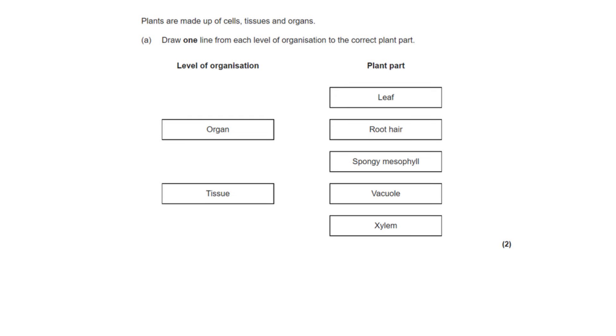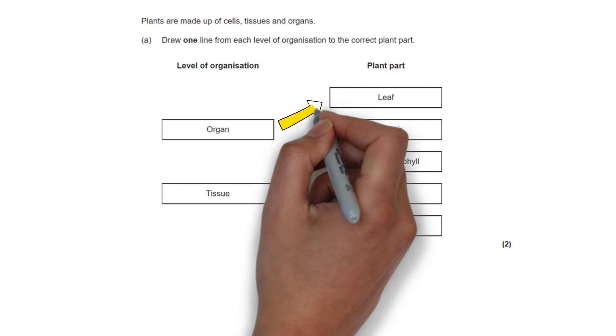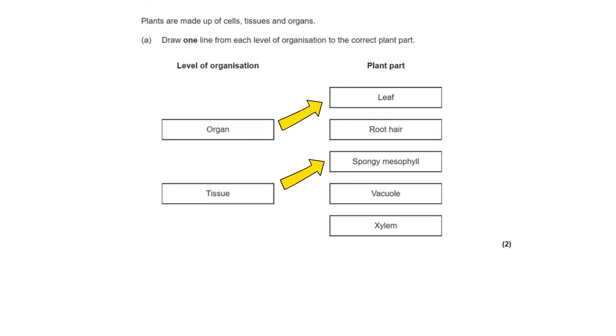The first question is asking us to draw one line from each level of organization to the correct plant part. You are expected to know that the leaf is the organ and the spongy mesophyll layer is the tissue. This is because this layer is a group of cells that are carrying out the same function.